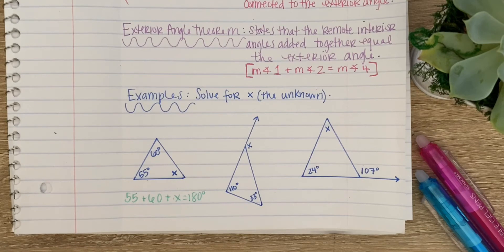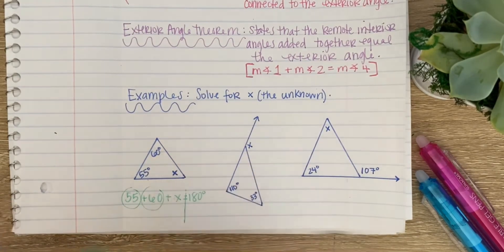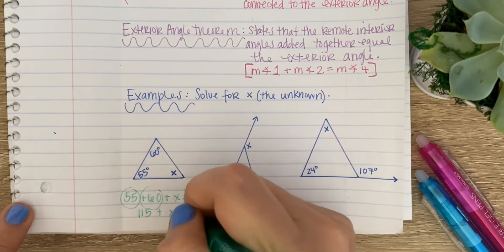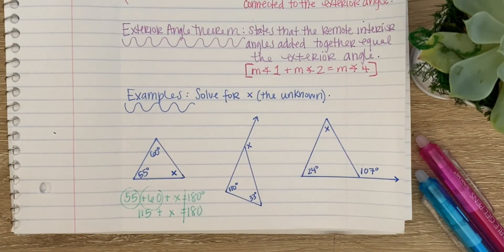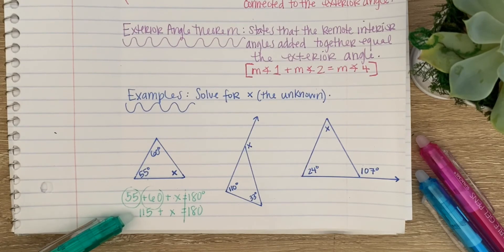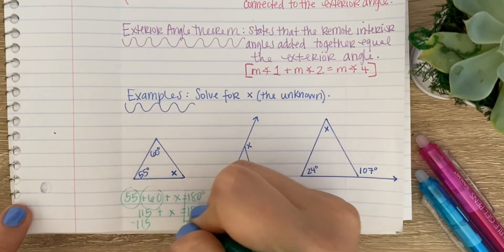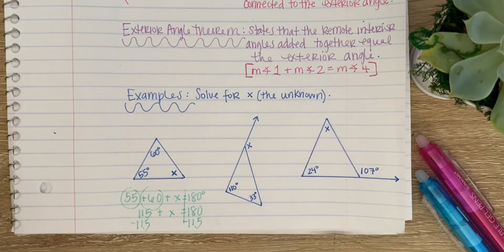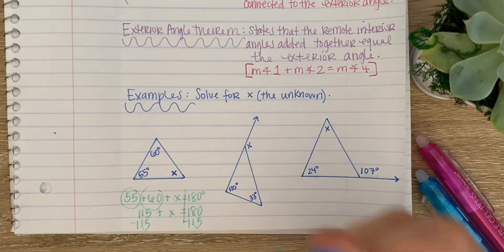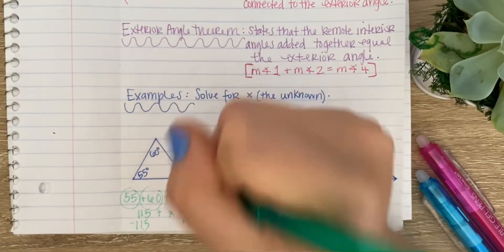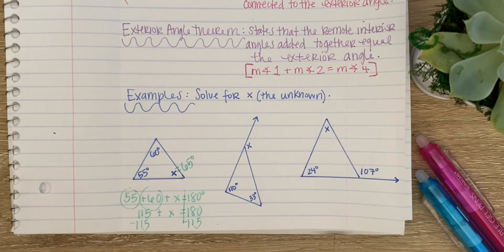That's how we set up our equation, and then we solve for x. First, combine like terms — 55 and 60. When we add them, we get 115 plus x equals 180. This is a one-step equation. Draw a line down the equal sign, find the side with the variable, find the number not attached to the variable, and perform the opposite operation. The opposite of positive 115 is negative, so we subtract. 180 minus 115 gives us x equals 65 degrees. Don't forget to label your angle with degrees.